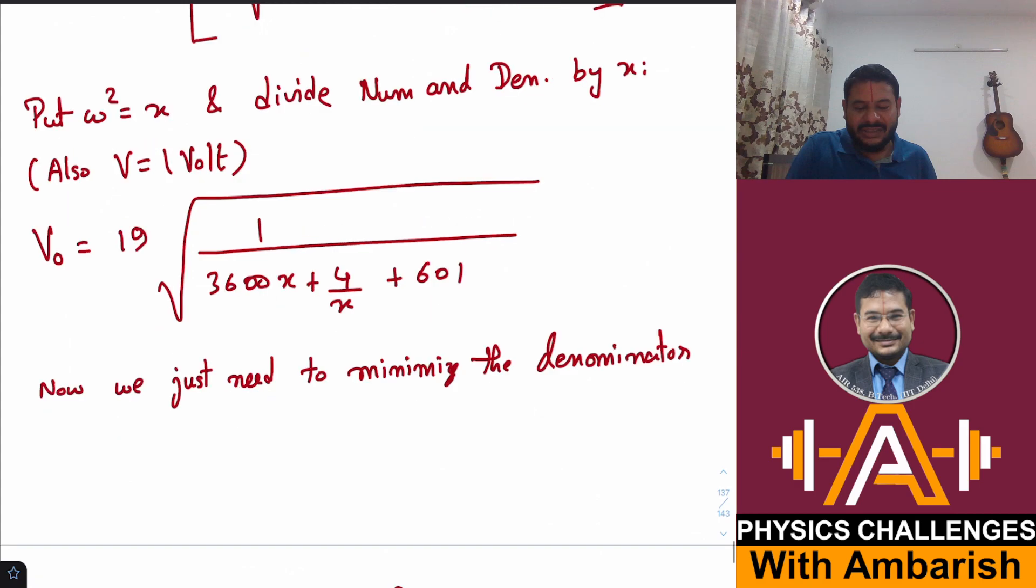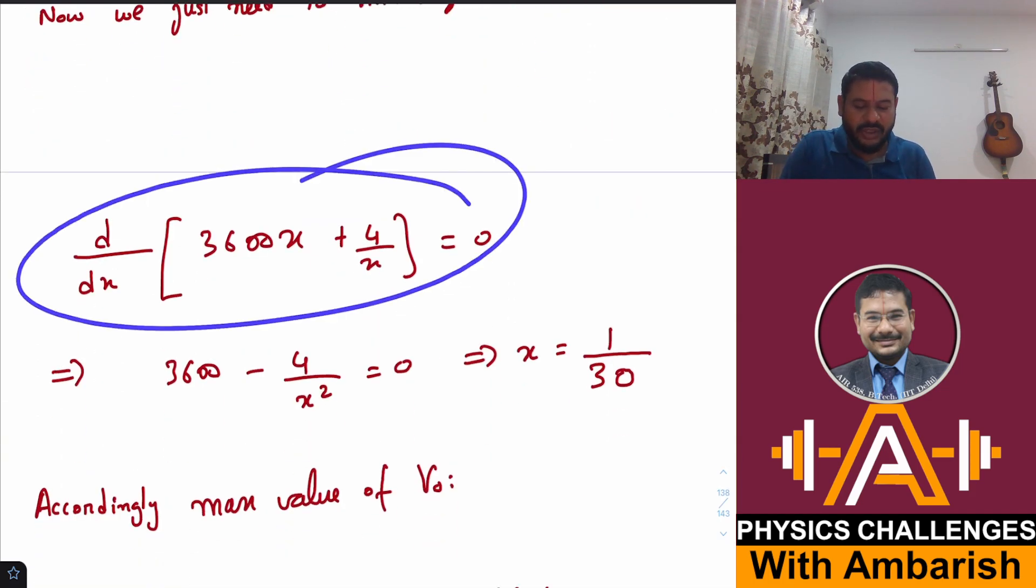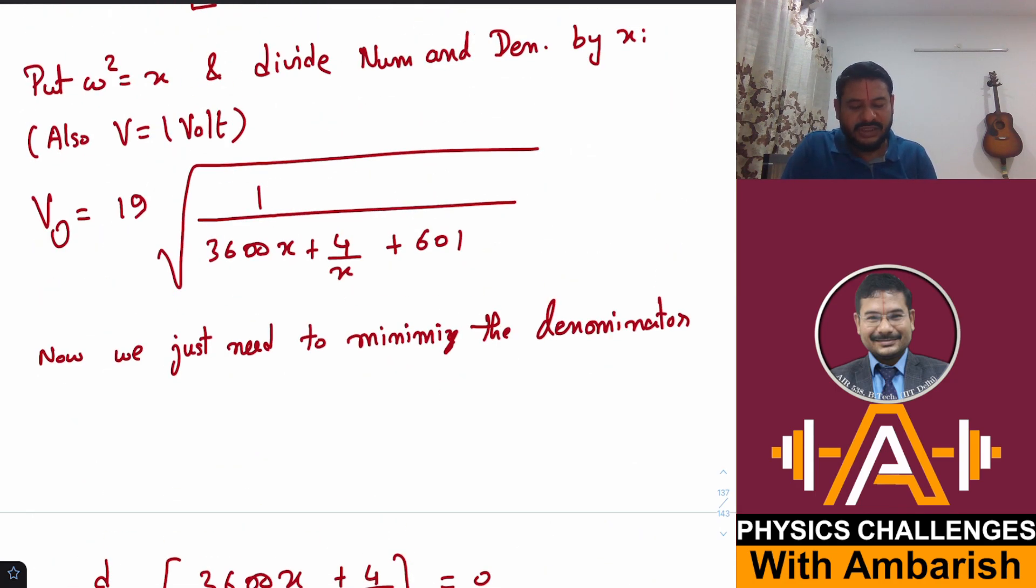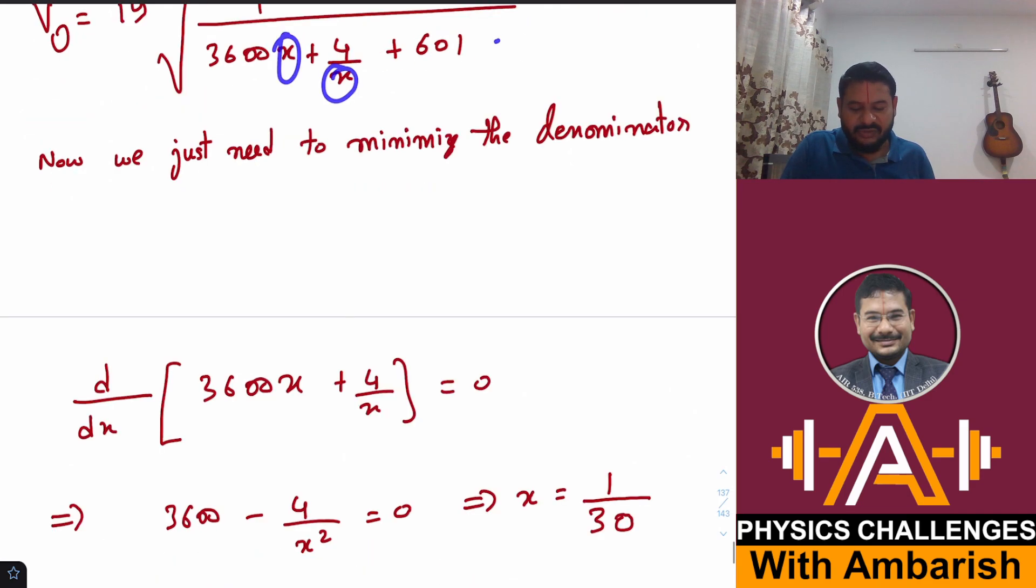Now it is easier to minimize. You just minimize this term and that will maximize V_output. You differentiate this with respect to X, put equal to 0. That gives X = 1/30, that is ω² = 1/30. Now put X as 1/30 in this and simplify, and you get the value of V_output.